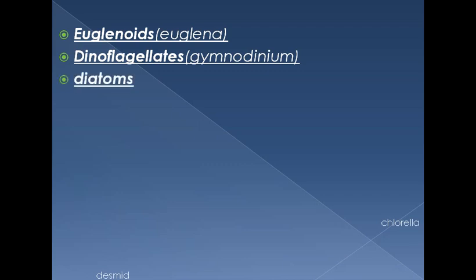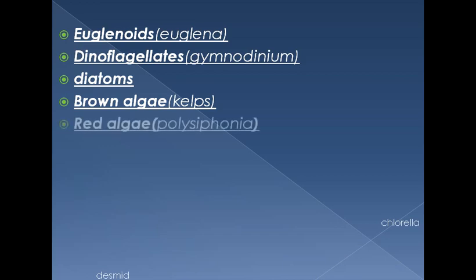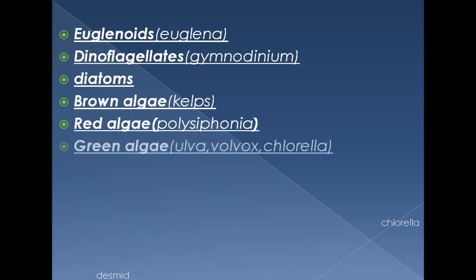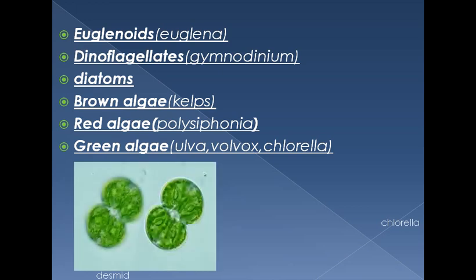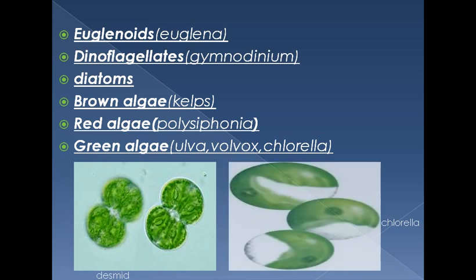Euglenoids are the first group of plant-like protists; an example is Euglena. Dinoflagellates — example Gymnodinium — are the most common photosynthetic organisms found in oceans. Brown algae (giant algae/kelps), red algae (Polysiphonia), and green algae include Ulva, Volvox, and Chlorella. Chlorella is unicellular; Volvox is colonial. Here you can see different types of green algae including desmids and Chlorella.